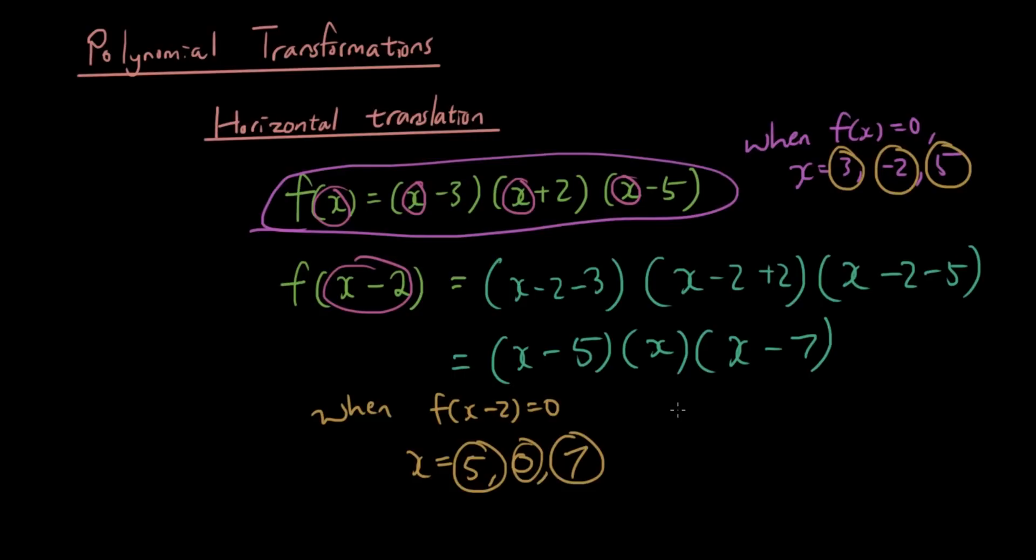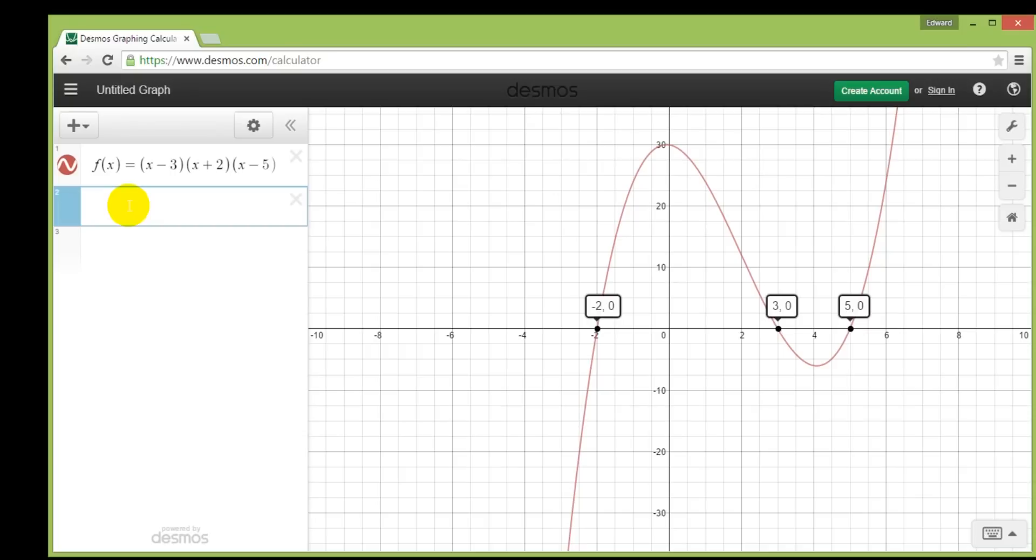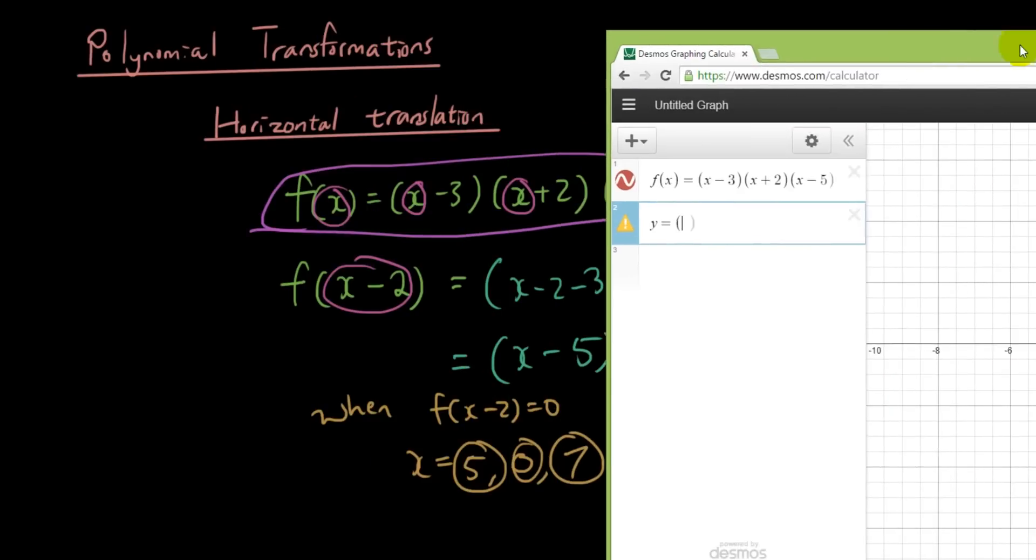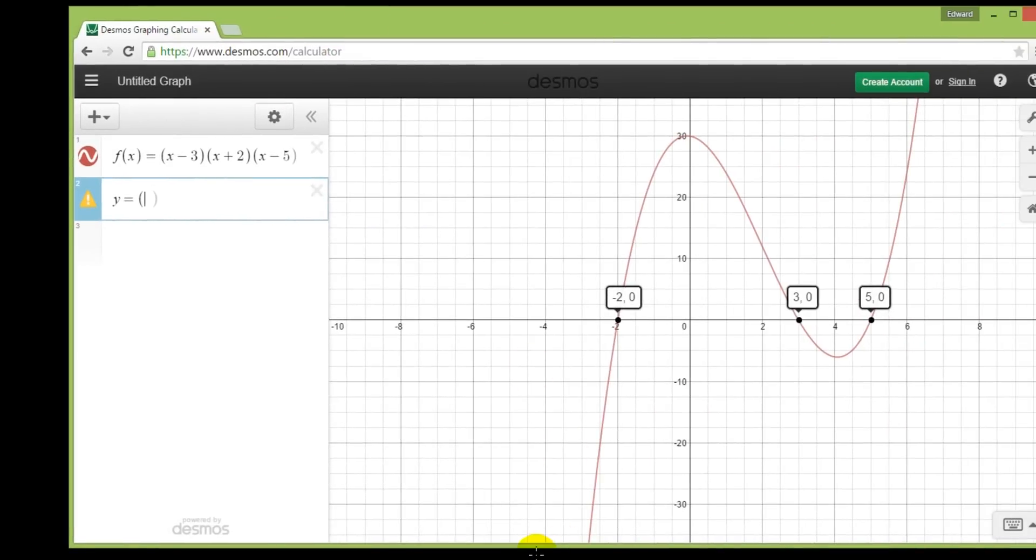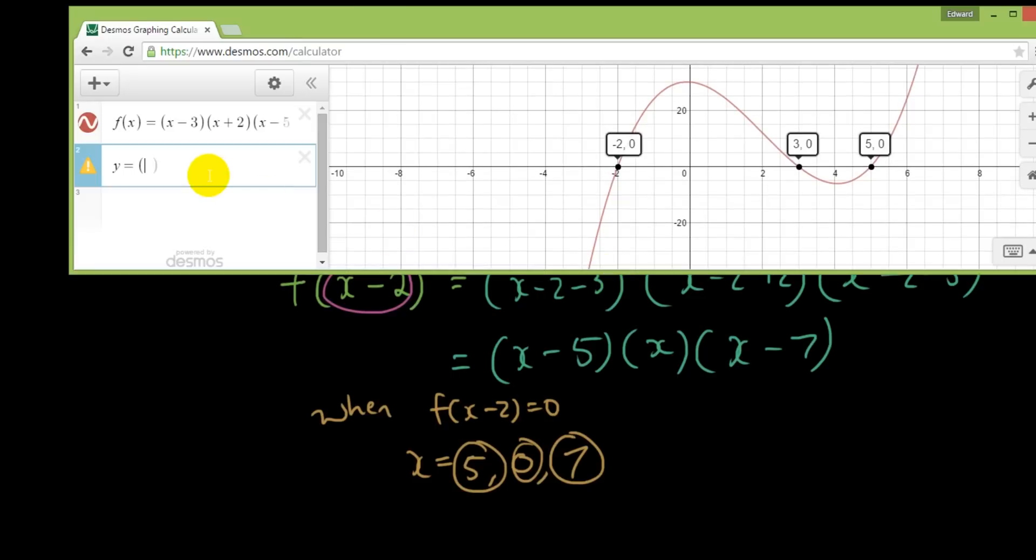So let's have a look at our graph. Now the quickest way of drawing it is instead of writing y is equal to all that stuff I just wrote. So instead of writing y is equal to x minus 5, x, x minus 7. So that is our new graph.